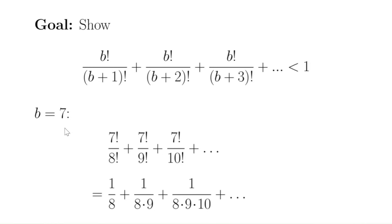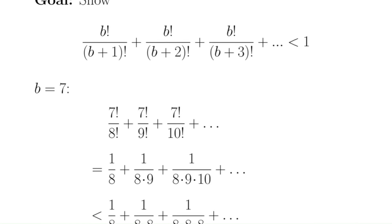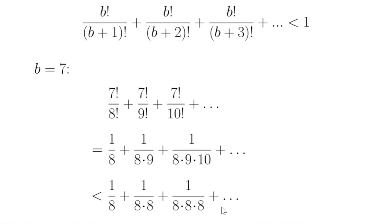Sometimes it's helpful to be concrete. Let's imagine b is 7 and see what happens. We get 7 factorial over 8 factorial plus 7 factorial over 9 factorial plus 7 factorial over 10 factorial and so on. These simplify: 7 factorial over 8 factorial is just 1/8, 7 factorial over 9 factorial simplifies accordingly, and so on. We want to show this series sums to something less than 1, and we do that by comparing it with a larger series. Notice that 8 times 9 is bigger than 8 times 8, but since this is in the denominator, the fraction is smaller — so this series is less than the comparison series.